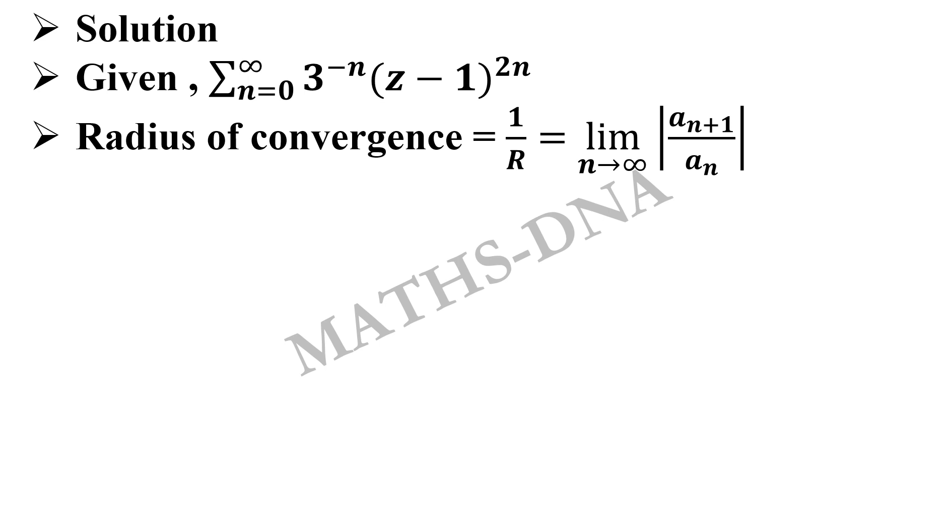Here our a sub n term is 3 raised to minus n. So we get 1 upon R equals to limit n tends to infinity 3 raised to minus n plus 1 upon 3 raised to minus n. Simplifying this gives us 1 upon R equals to 1 upon 3 which implies R equals to 3, that is radius of convergence is 3.